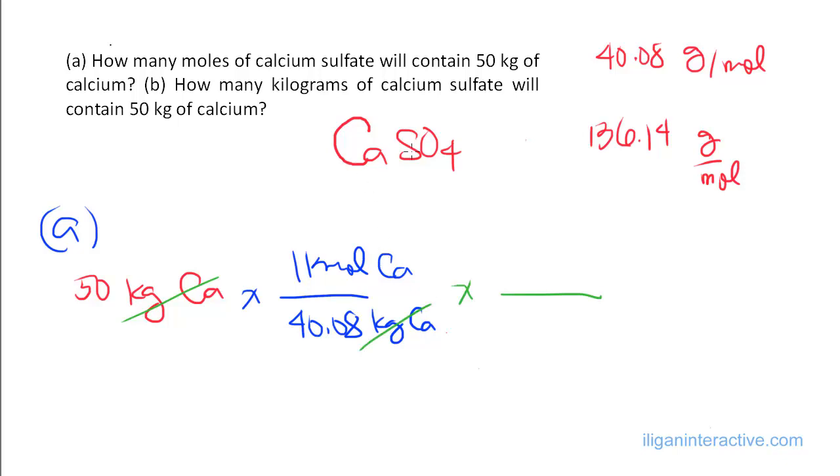Then we know that 1 kilomole of Ca, based on the formula CaSO4, is equivalent to 1 kilomole of CaSO4, so basically it's saying that a kilomole of calcium sulfate contains 1 kilomole of Ca, and that's it.